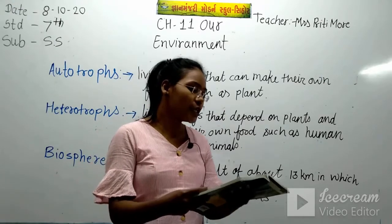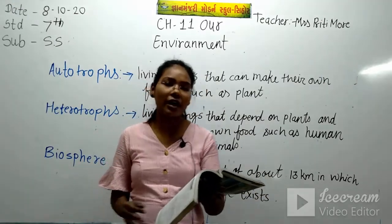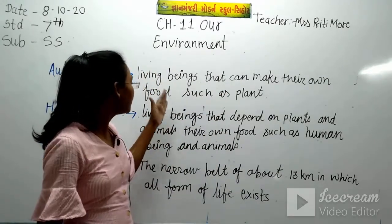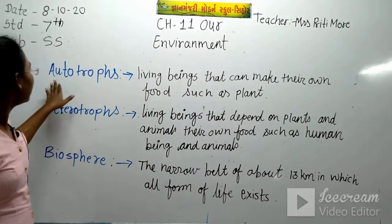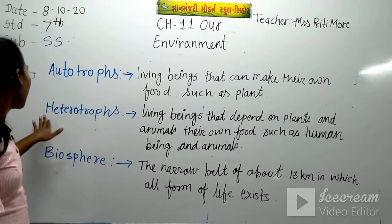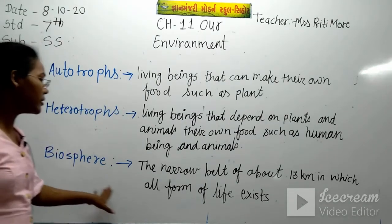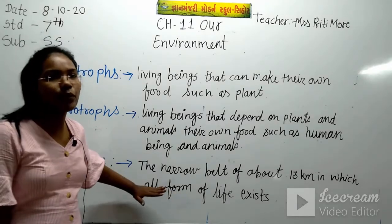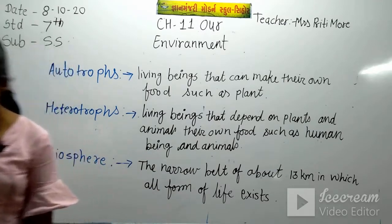This is the end of the chapter on Our Environment. You should note down the glossary terms: autotrophs, heterotrophs, and biosphere. Note down the meanings of these particular words in your notebook.